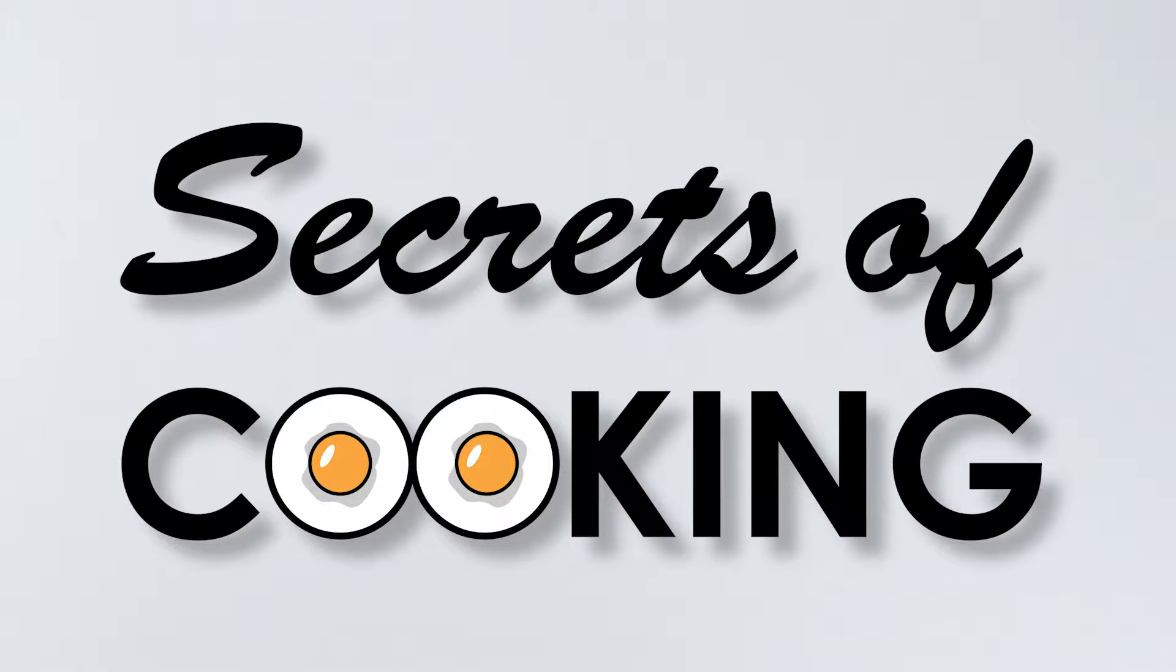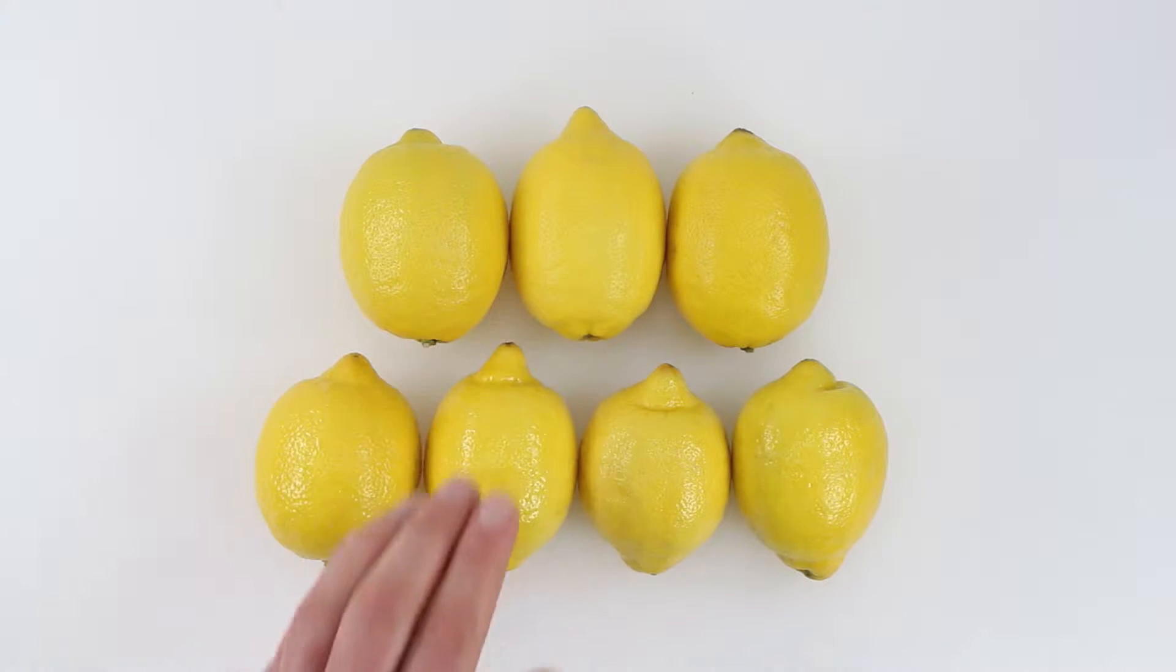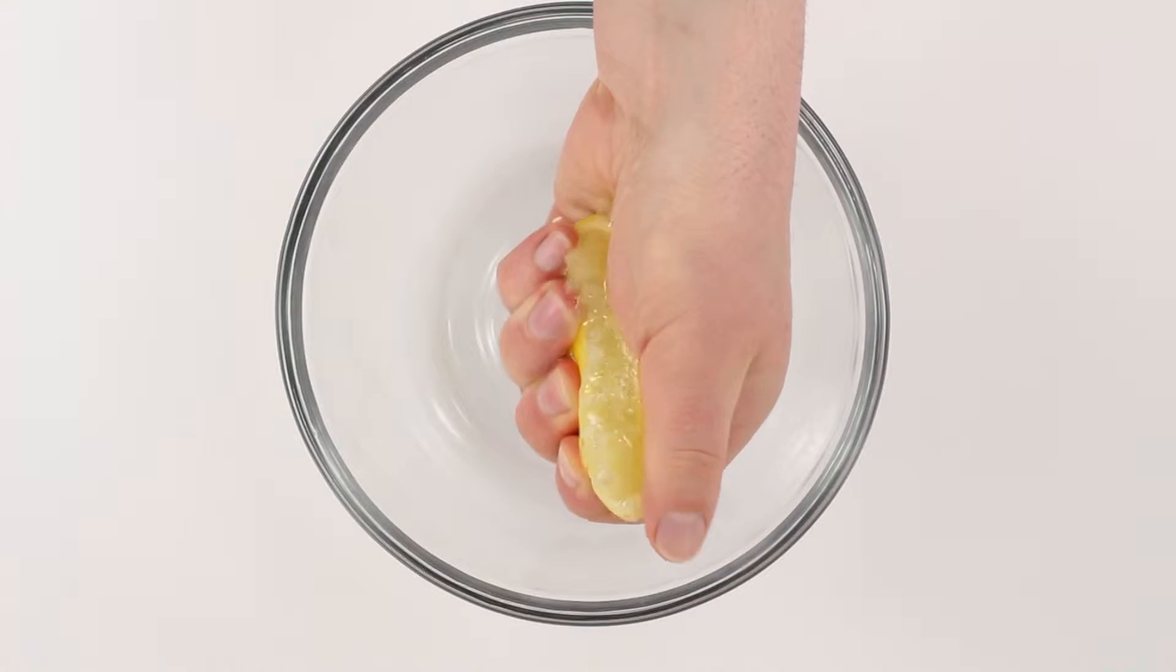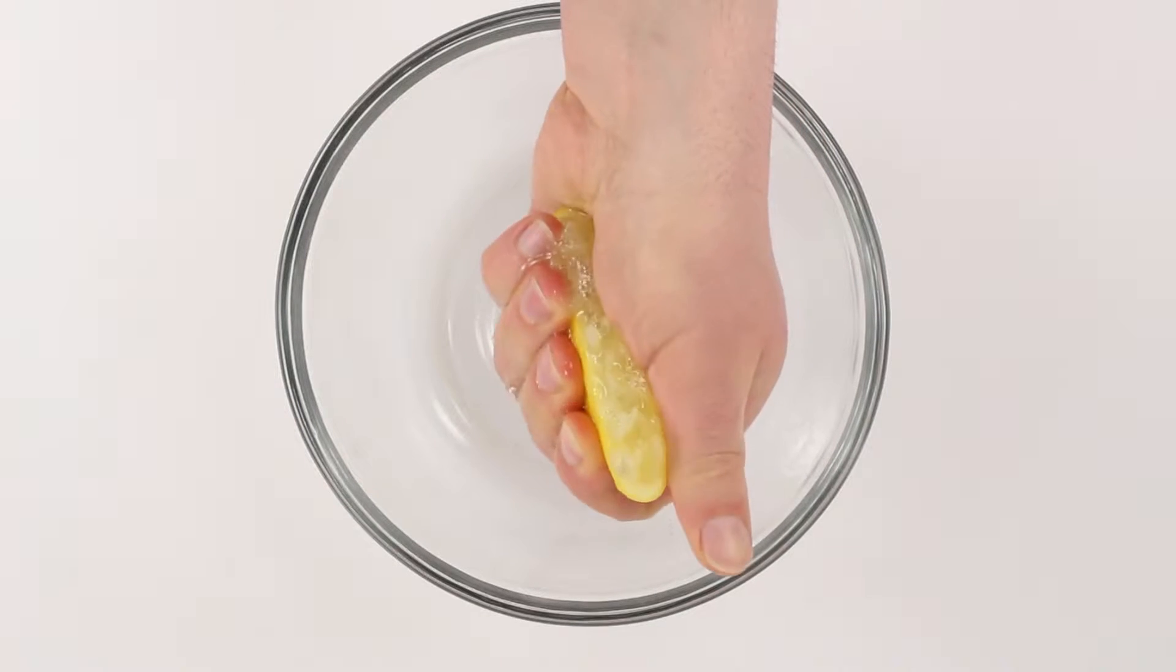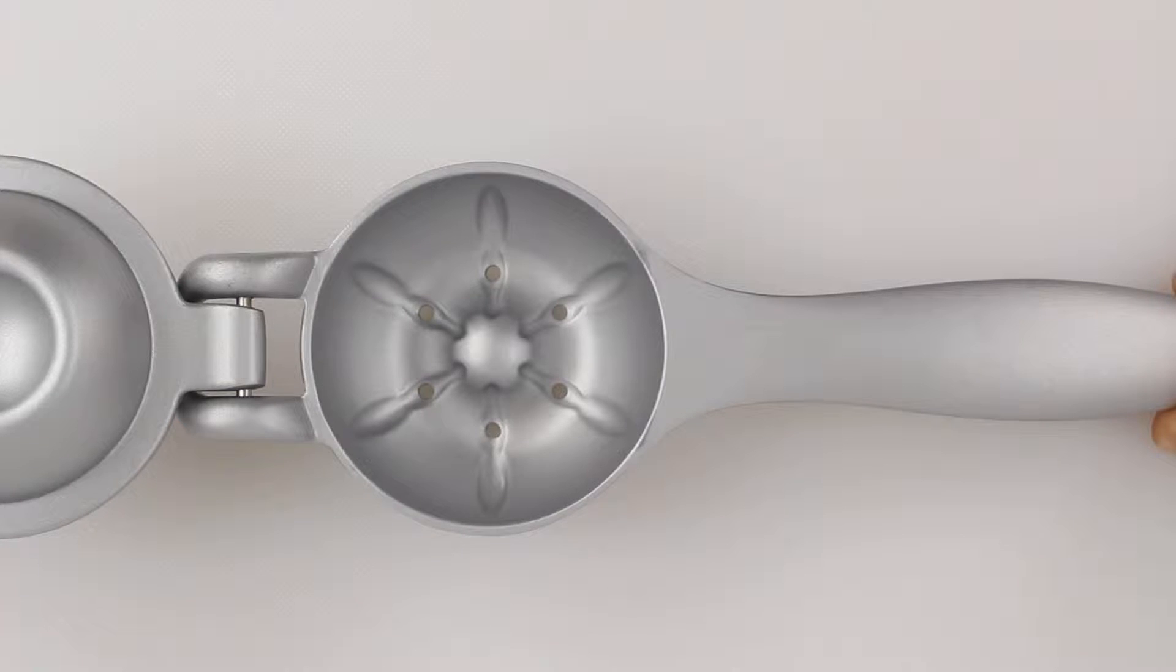Welcome to Secrets of Cooking. There's definitely a lot of methods for juicing a lemon. Using your hands is always an option, but instead you're going to use a handheld citrus press.